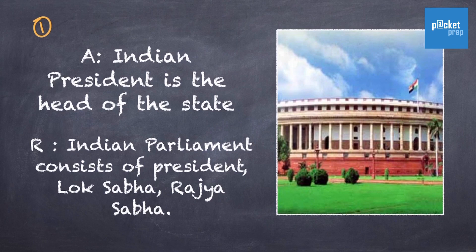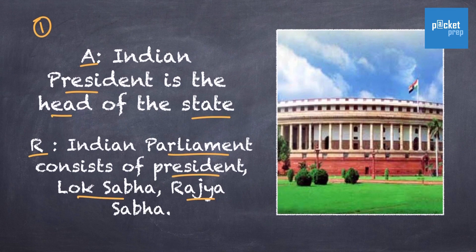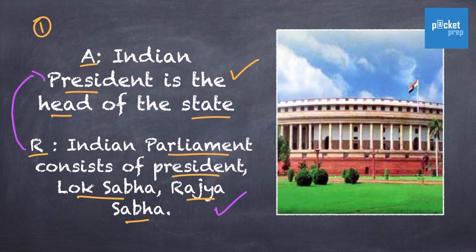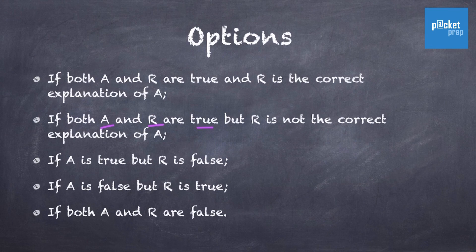Here is the first question. The assertion is: Indian President is the head of the state. The reason is: Indian Parliament consists of President, Lok Sabha, and Rajya Sabha. Based on our knowledge, we know that President is the constitutional head, so the assertion is true. The reason is also true, but in this case the reason is not the correct explanation for the assertion — they are two independent facts. So if both A and R are true but R is not the correct explanation of A, we pick option B, that is the second option.